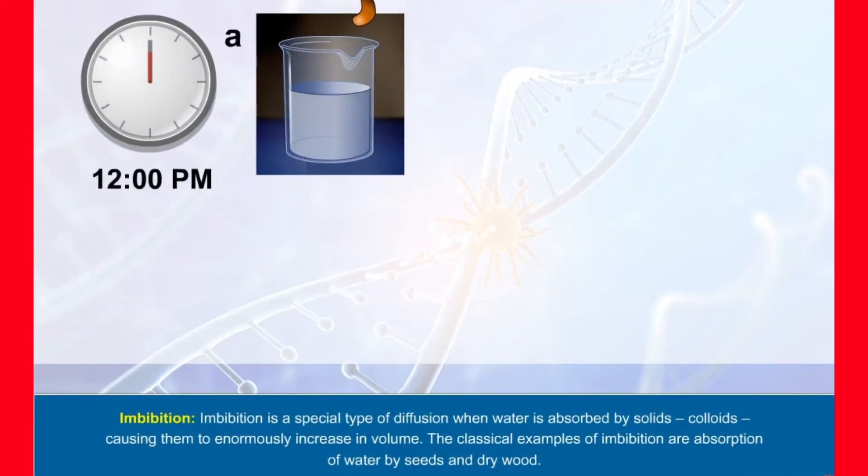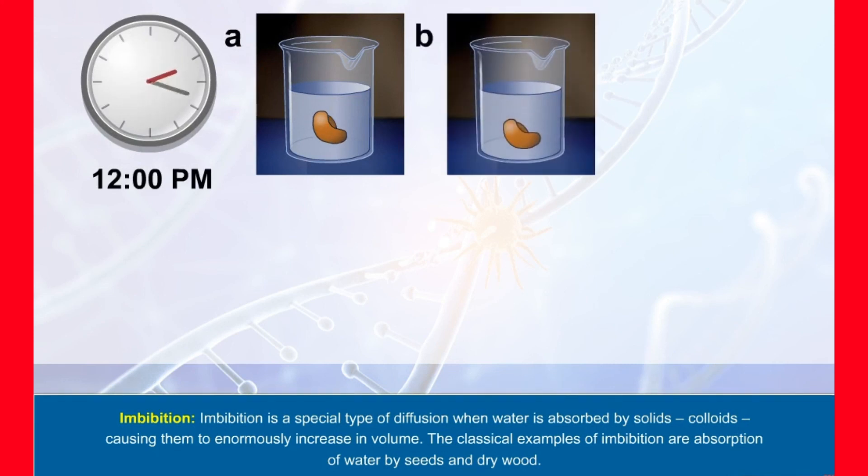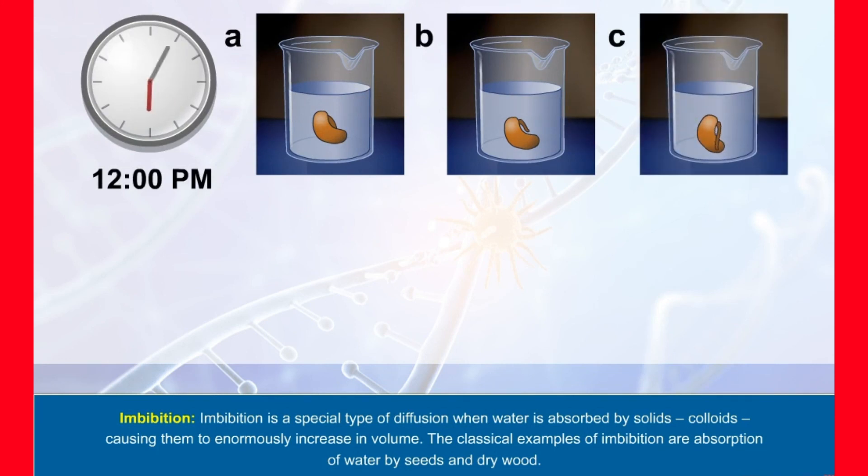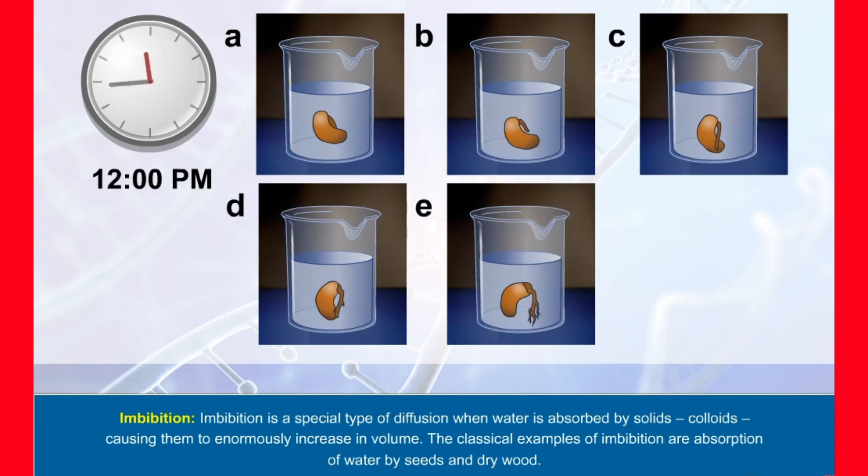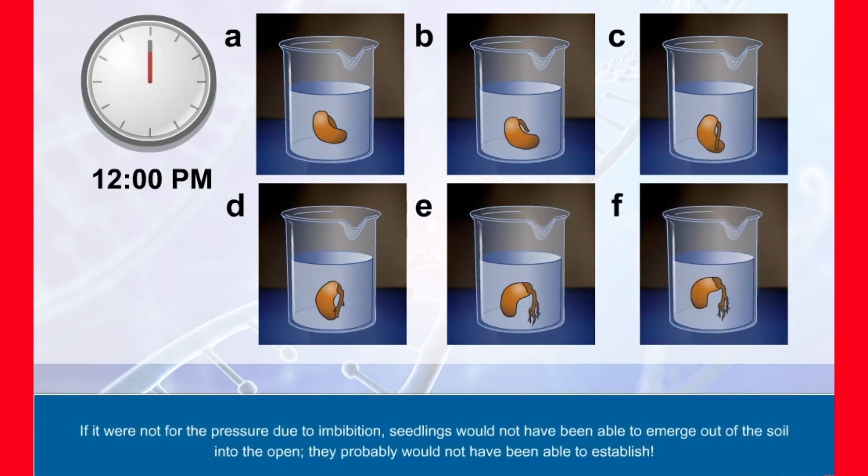Imbibition: Imbibition is a special type of diffusion when water is absorbed by solids, colloids, causing them to enormously increase in volume. The classical example of imbibition are absorption of water by seeds and dry wood. If it were not for the pressure due to imbibition, seedlings would not have been able to emerge out of the soil into the open.